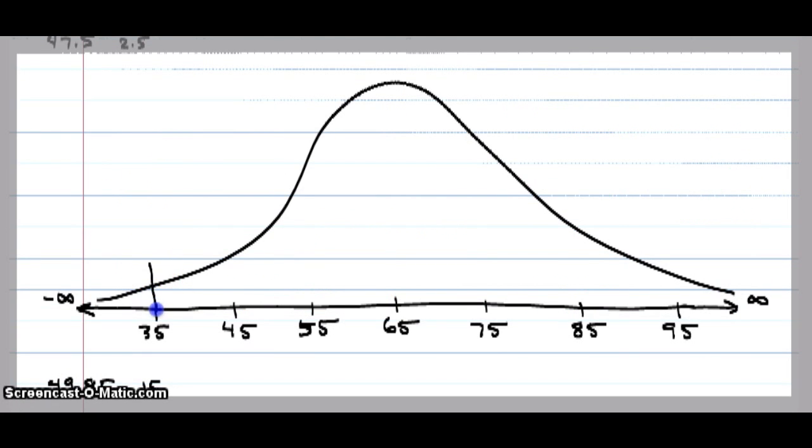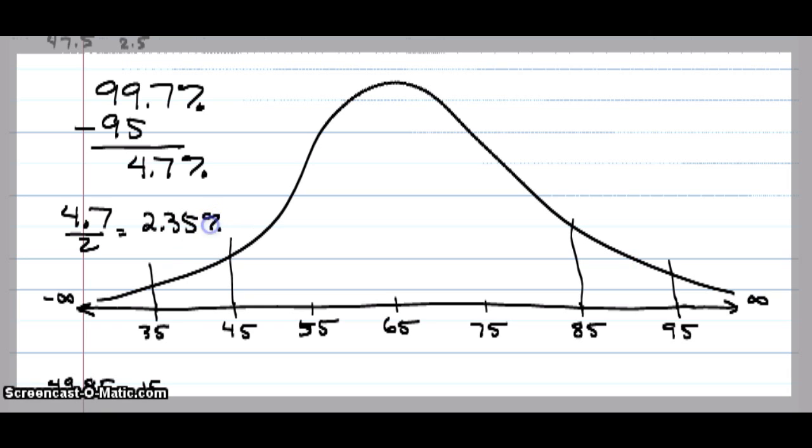We said from 35 to 95 was 99.7% of the data under the curve. If I subtracted out the 95% that's between 45 and 85, I have 4.7%. If we divide that 4.7 by 2, I have 2.35% between 35 and 45.